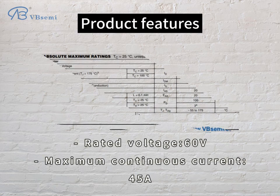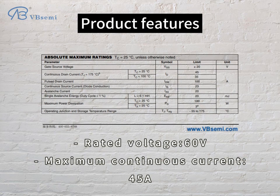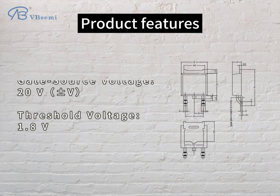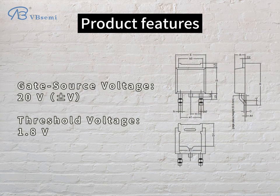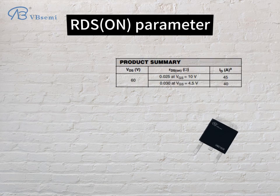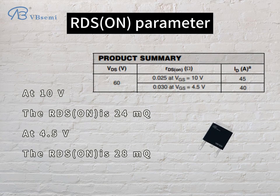Product features: rated voltage 60V, maximum continuous current 45A, gate-source voltage 20V, threshold voltage 1.8V. The RDS(on) parameter at 10V is 24mΩ.